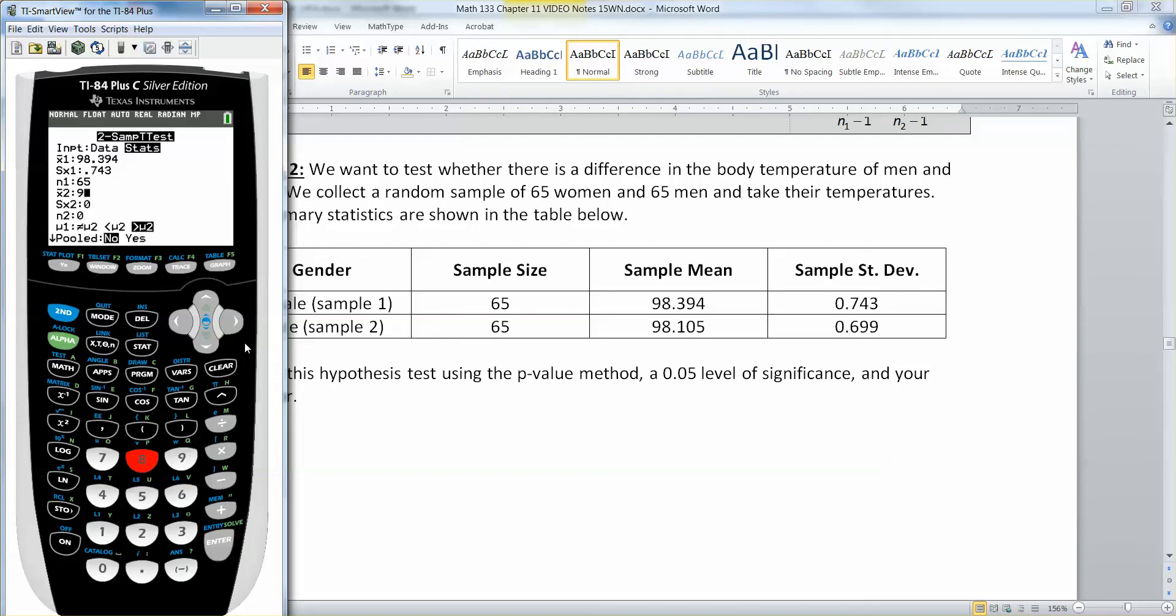Then X-bar 2 is your sample mean for the second group, which is 98.105. Then your standard deviation for that second group, which is 0.699. Then your sample size again, which is 65.